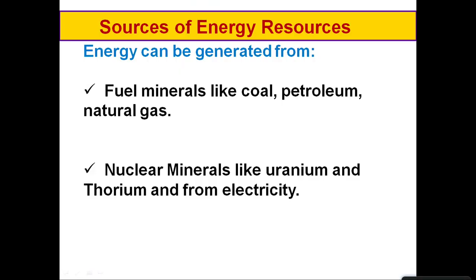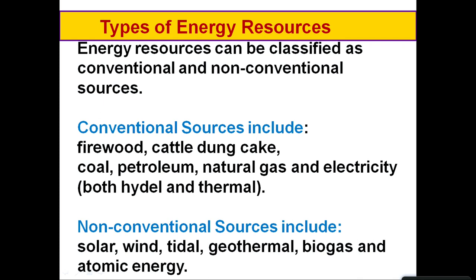Where do we get this energy from? There are a number of sources. We have fuel minerals like coal, petroleum and natural gas, and nuclear minerals like uranium and thorium. We also get energy from electricity. When we classify minerals as energy sources, we have two categories: conventional and non-conventional energy resources.